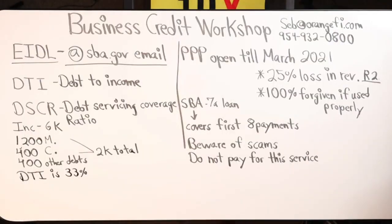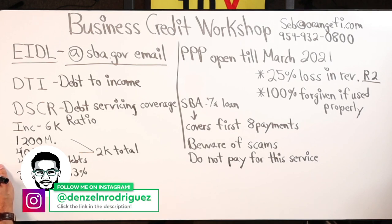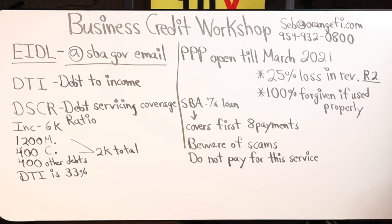A DTI of 33% is not bad. Typically for mortgages they're looking at around 30–35%. For other loans such as personal lines of credit, you probably need to be under 30%. Walking the line at 30% is thin, and I personally don't like operating in that 50-50 chance space. I'd recommend striving to be under 30%.